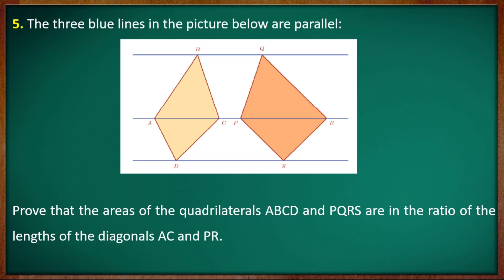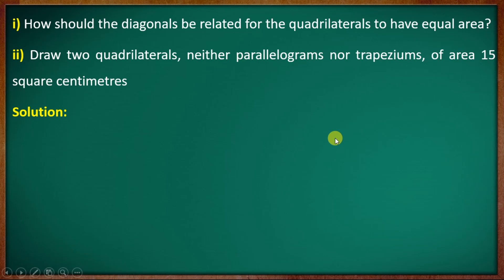The three blue parallel lines in the picture — five lines are parallel. Prove that the areas of quadrilaterals ABCD and PQRS are in the ratio of the lengths of their diagonals AC and PR. Sub-question: how should the diagonals be related for the quadrilaterals to have equal area?